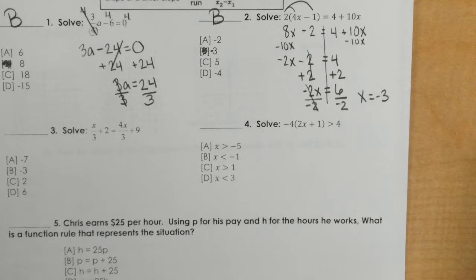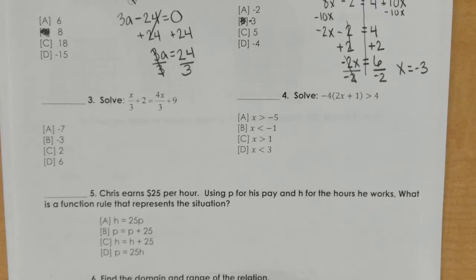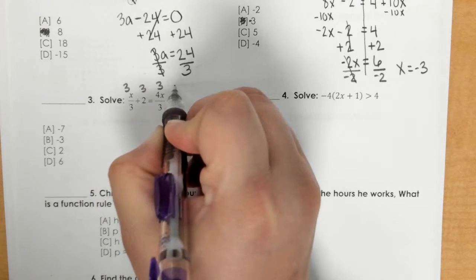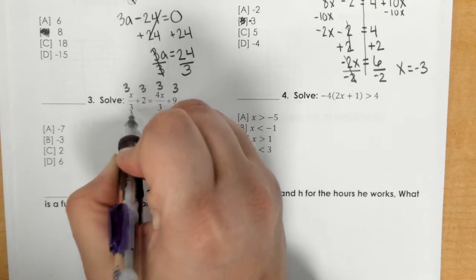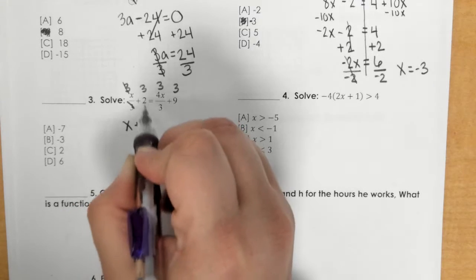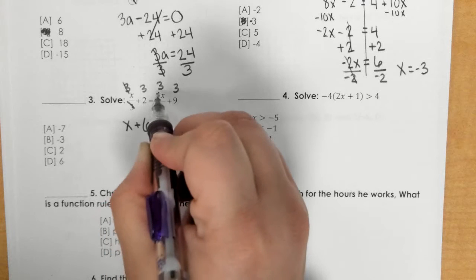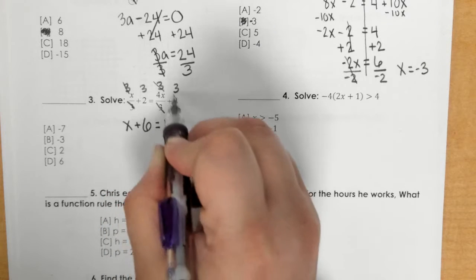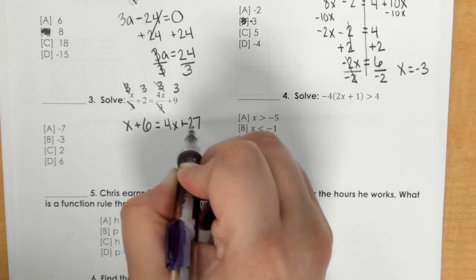Number three, we also have a fraction so we need to clear it. If we look at our denominator we have two threes, so we need to multiply all the terms by 3. These threes here in the fraction cancel out, so all we have left is x. Then 3 times 2 is 6, these threes cancel and we have 4x, and then 3 times 9 is 27.